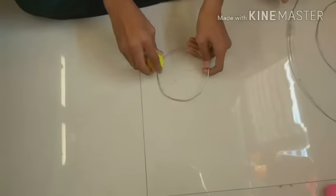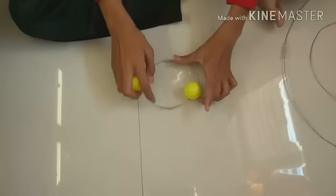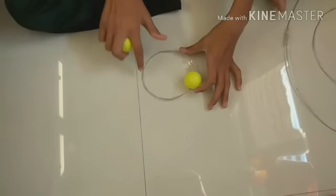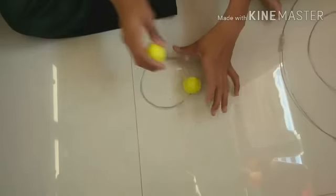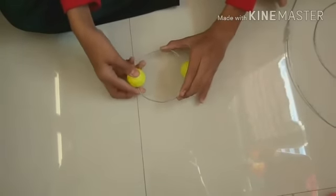Now we have to insert this ball in this cord, like this. We have made the Bohr's atomic model of hydrogen. Now we are going to make the Bohr's atomic model of helium.